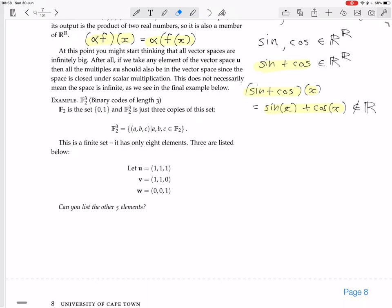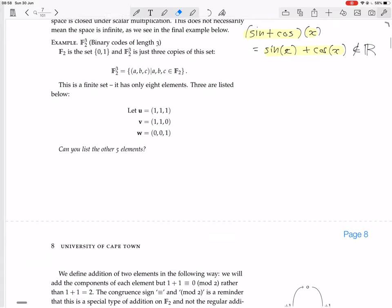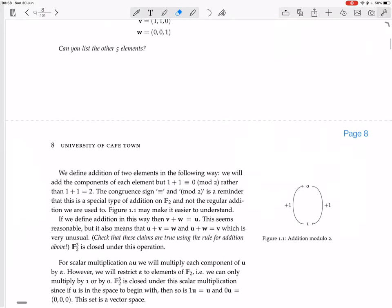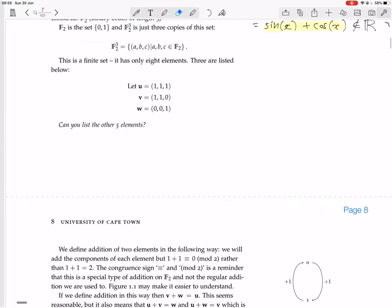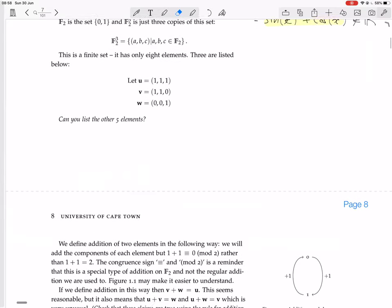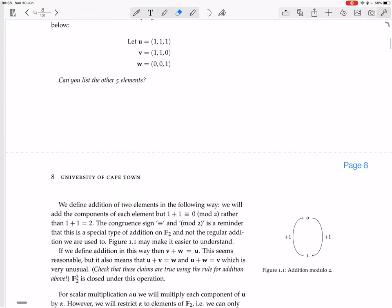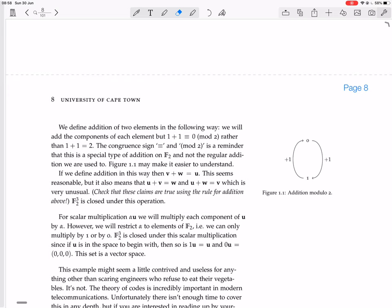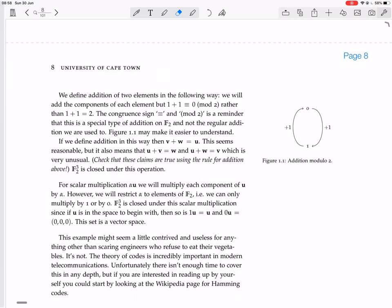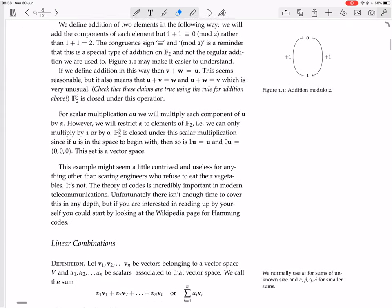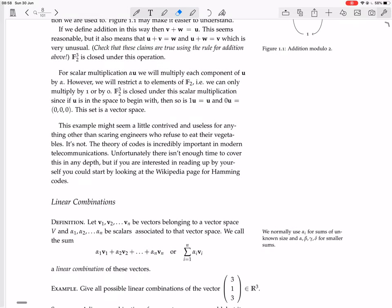I'm going to skip this because it's not going to be used for this course. It's just given there as an example of how vector spaces can be different from what you might think, but it's not important for now. So there's that example. Okay, and that's the end. Linear combinations in the next video.